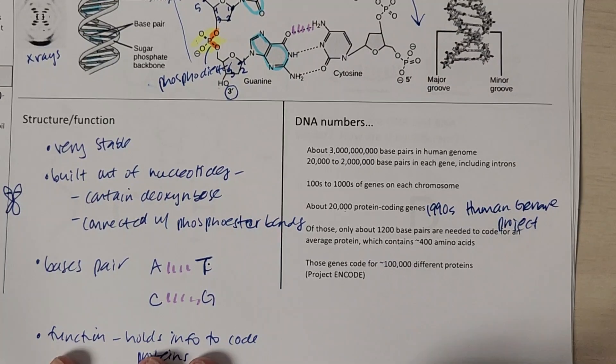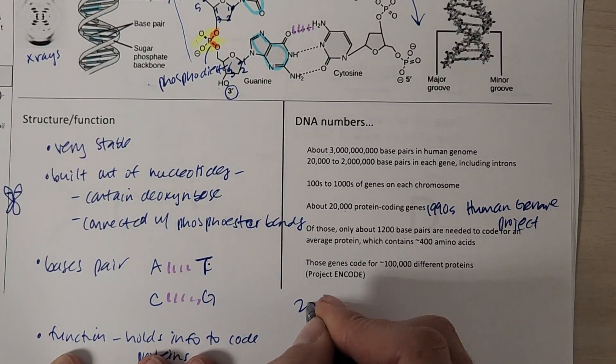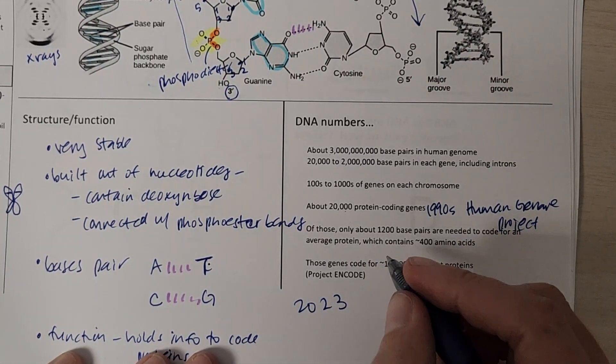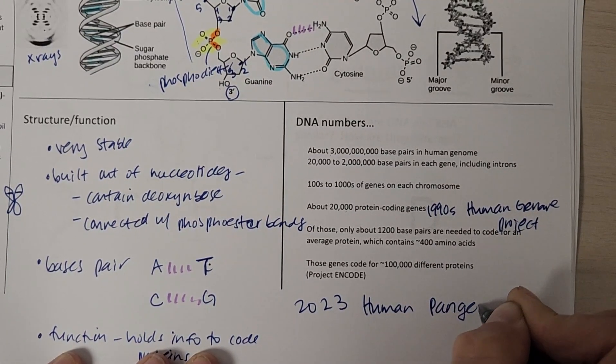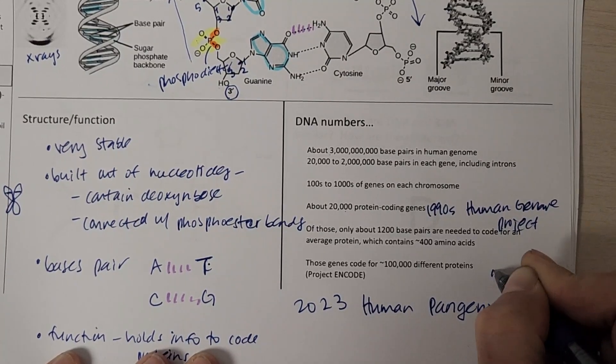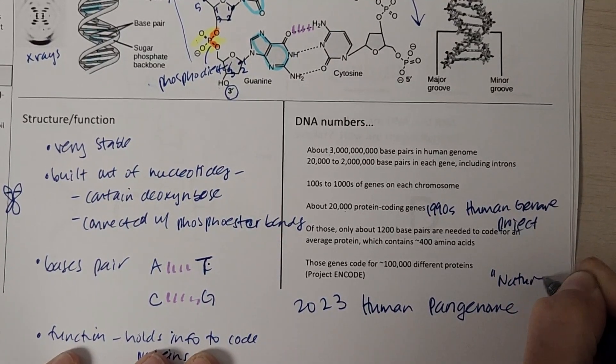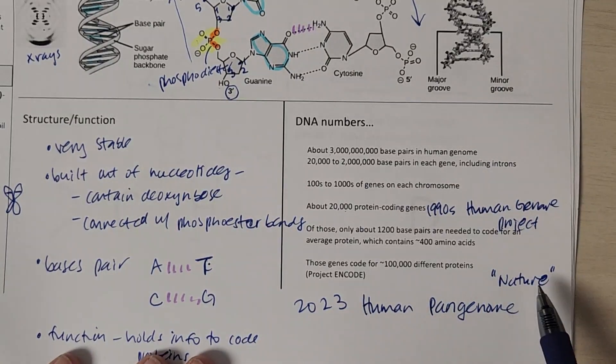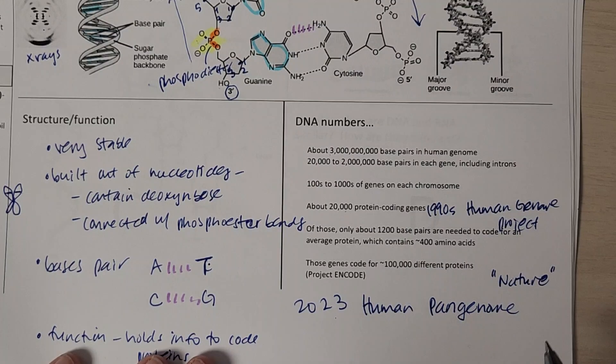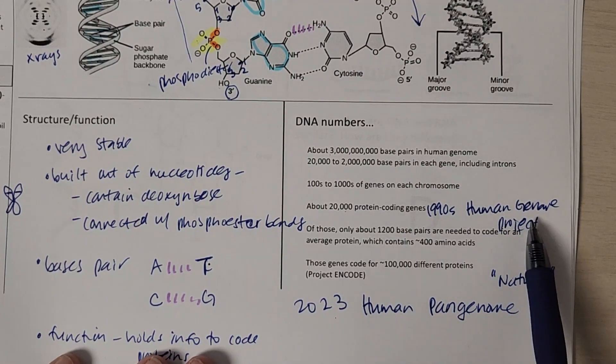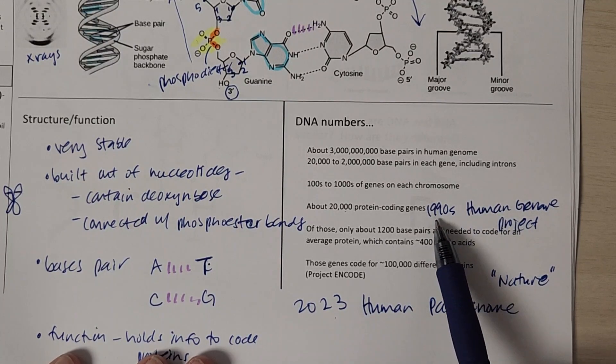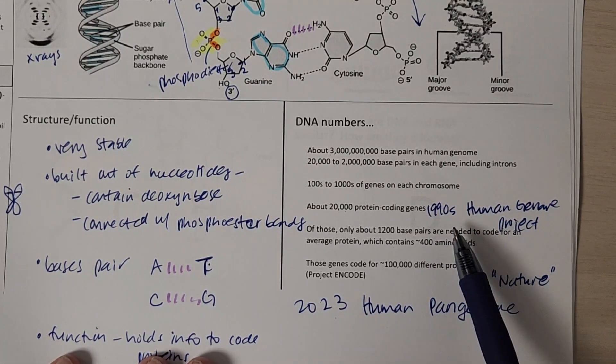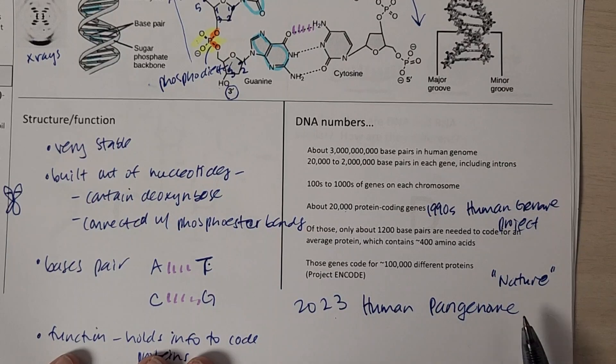And then something just cutting edge, I was just reading an article this week. So 2023, there's a new project. You can search this up, Human Pan Genome. And if you add the search term Nature, that's a very famous scientific journal. So Human Pan Genome Nature, 2023. This Human Genome Project was just the genome of one person. And that was really like the scientific and computing power we had 30 years ago.